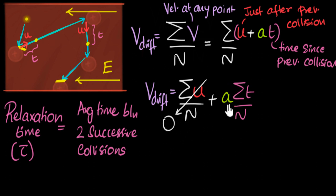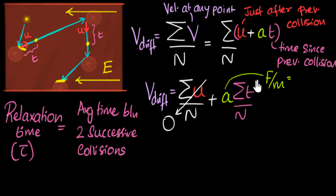Now for the acceleration: acceleration is force divided by mass. The force is the electric force, which is qE. We know the charge q for an electron is e. So acceleration a = qE/m.